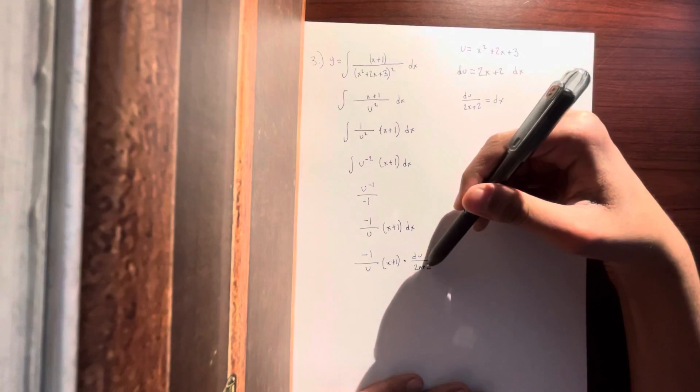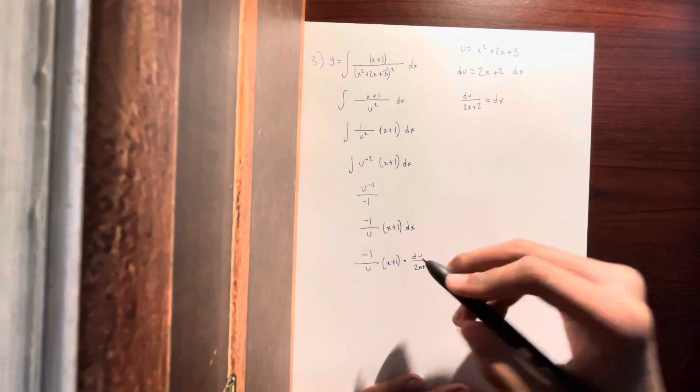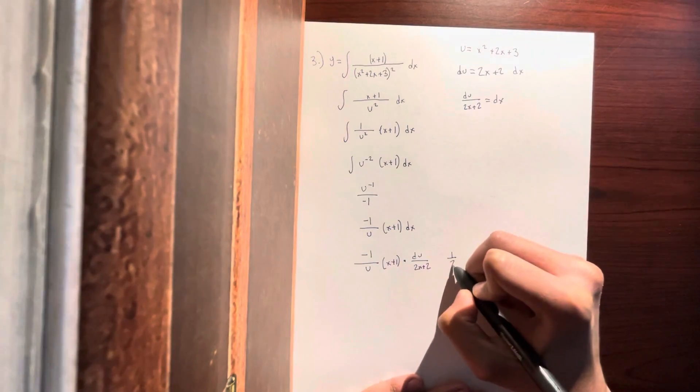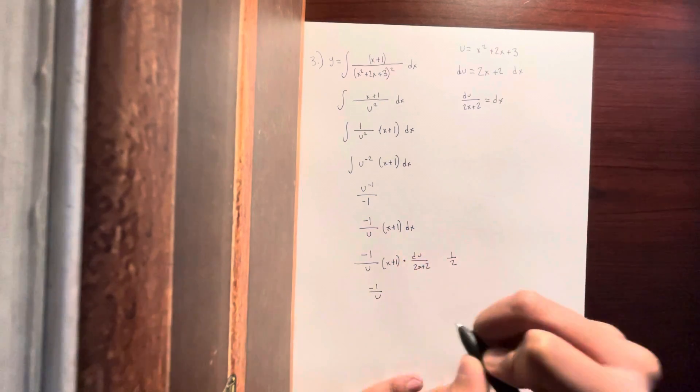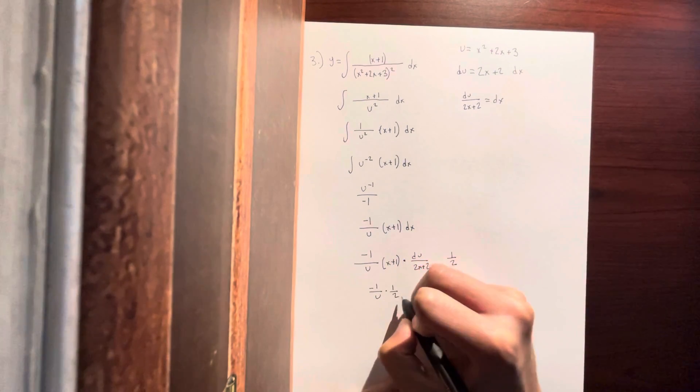As 2x + 2 is twice the amount as x + 1, this would be 1/2. So it will be (-1/u) times (1/2) du. So it will be -1/(2u).